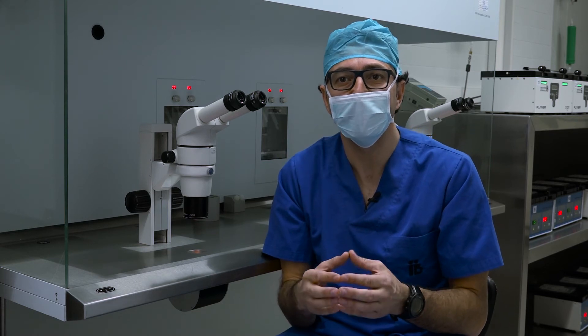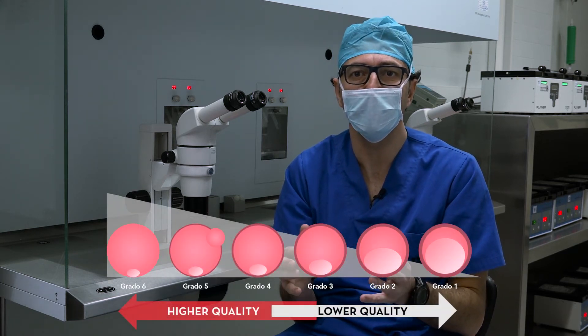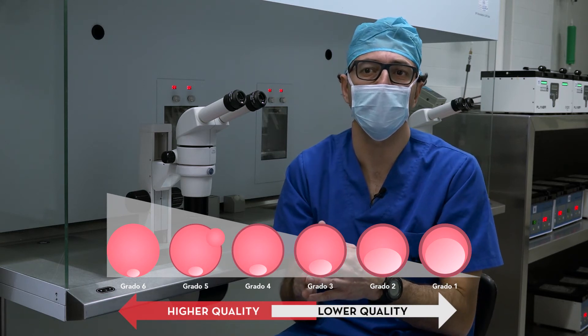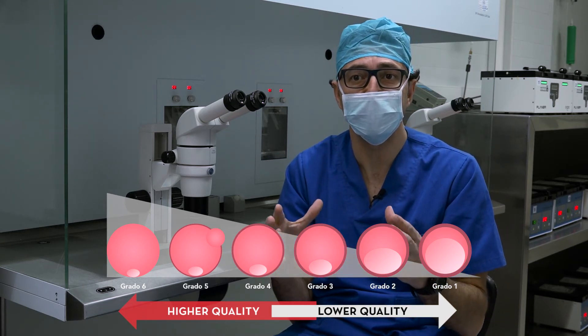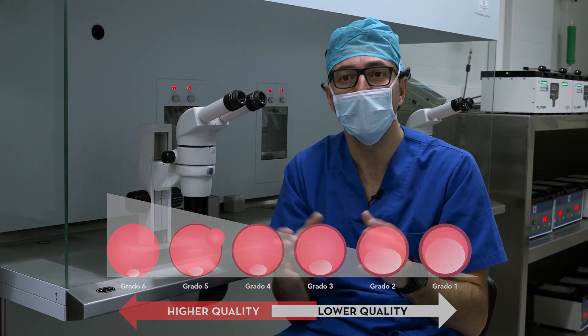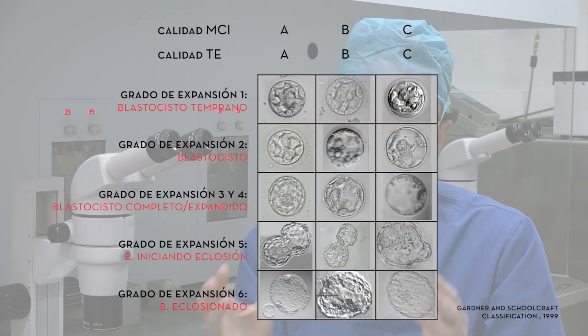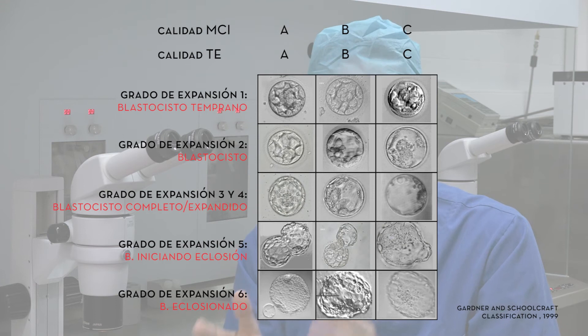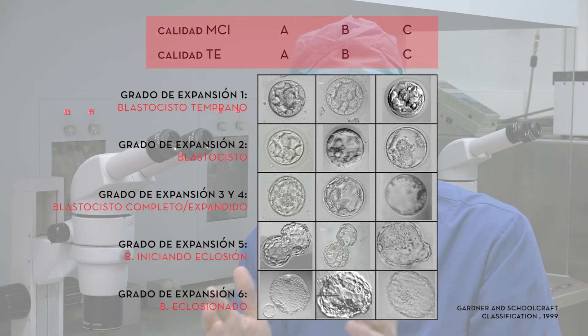The most standardised international classification system used worldwide is the Gardner and Schoolcraft 1999 classification system. It only takes into account a single observation on the fifth or sixth day of development. Expansion is assessed in six stages, from the least to the most. From grade three onwards, there is a morphological criteria to divide ICM and trophectoderm into three categories — A, B, and C — from poorest to best quality, based on the number of cells, their cohesion, and their appearance.